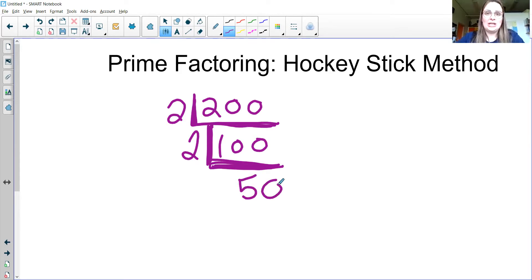So here again you need another prime number that divides into 50. 50 is not a prime number so you draw another hockey stick. I'm going to go with two again. Two goes into 50 25 times. 25 is not a prime number so I keep going. Five divides into 25 five times. And now I'm done because five, the number I'm left with, is a prime number.